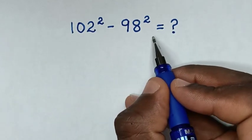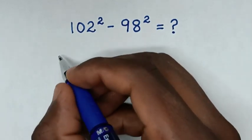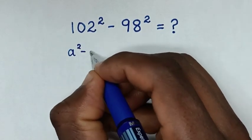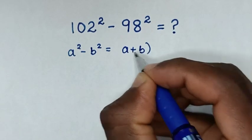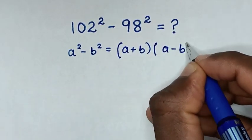So from this problem, we will use differences of square formula, which is a square minus b square is equal to a plus b bracket times a minus b.